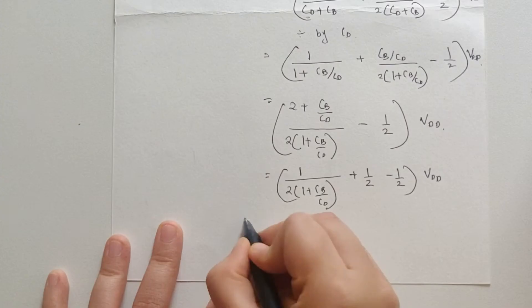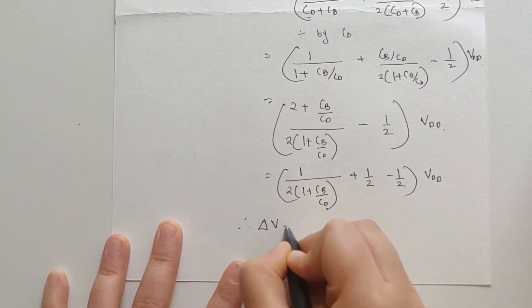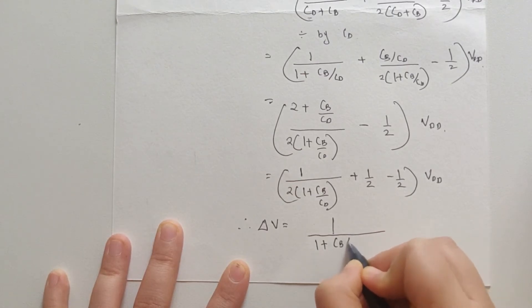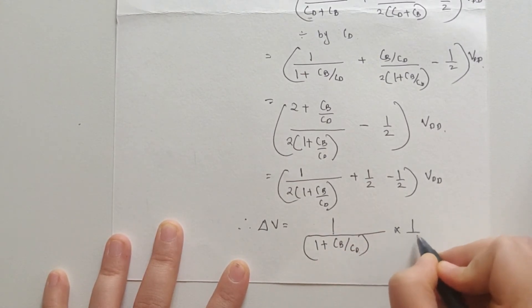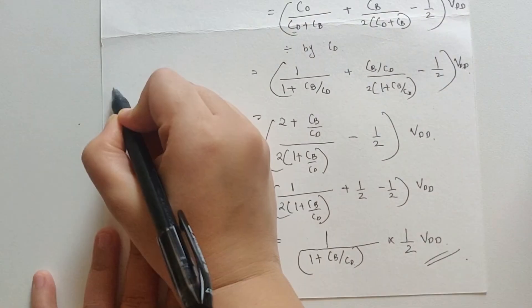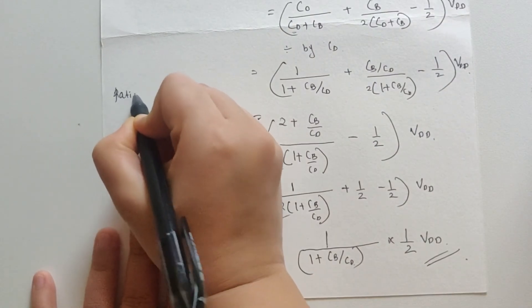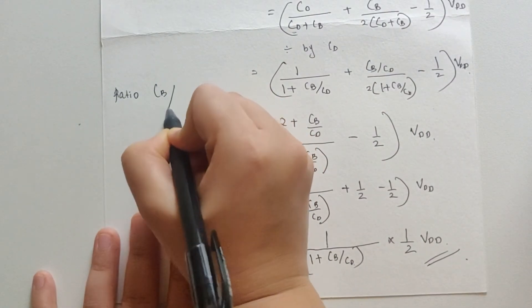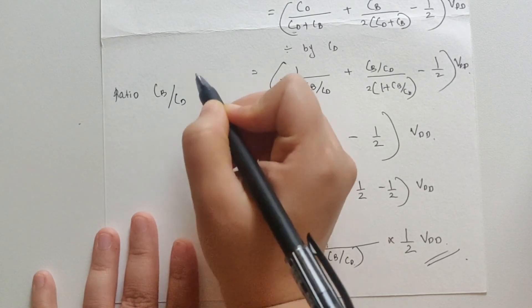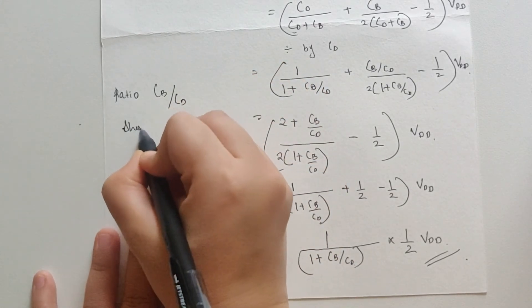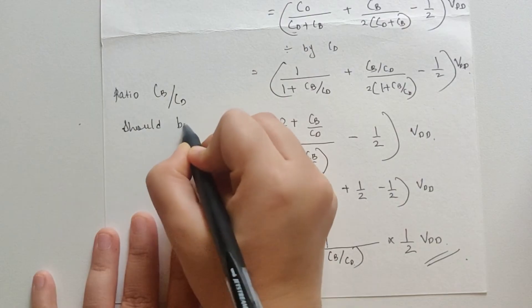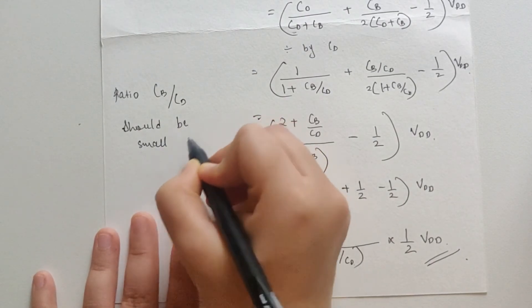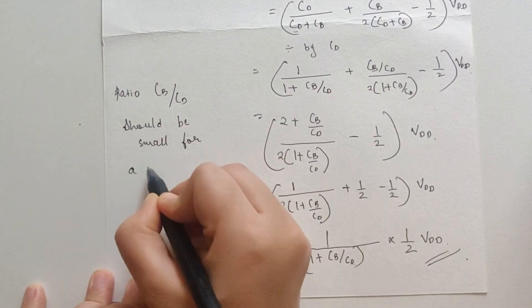Finally, delta V is equal to 1 by 1 plus CB by CD times half VDD. So, this is the value of delta V or change in voltage. Now, as you can see here, delta V depends on the ratio CB by CD. And CB by CD is generally large as the bitline capacitance is large. Thus, we get a very small change in bitline voltage.